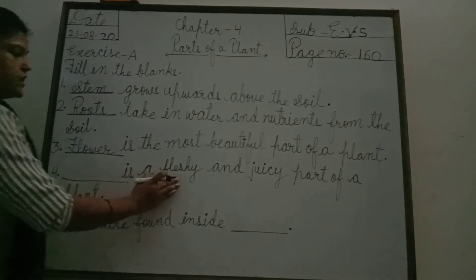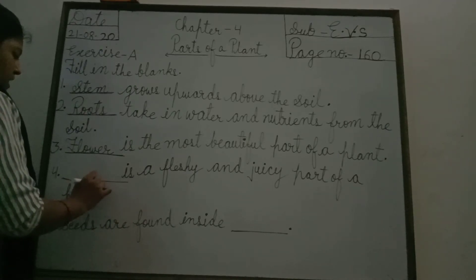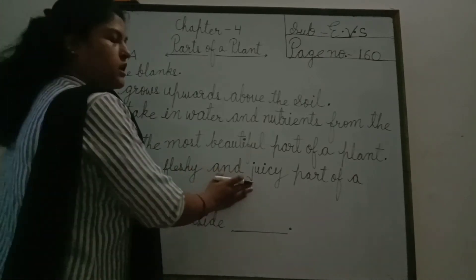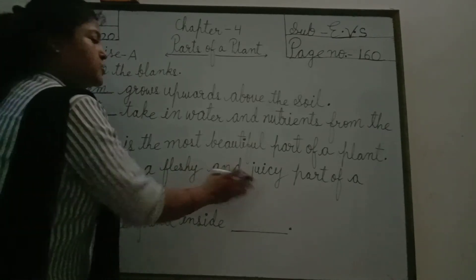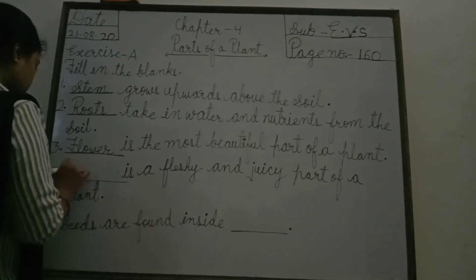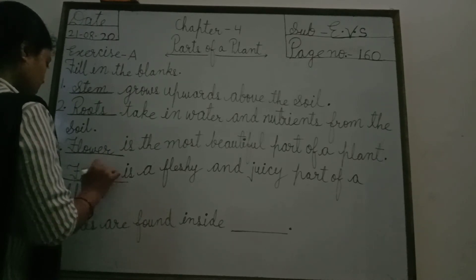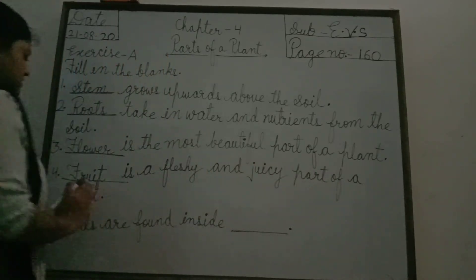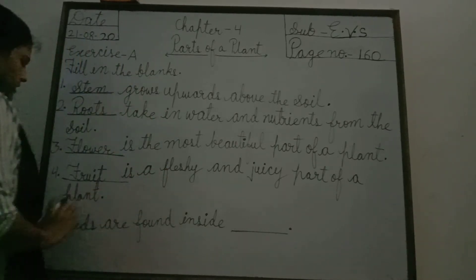Question number 4 is: dash is a fleshy and juicy part of a plant. Plant ke aise koon se part hain jho fleshy — means motor — and juicy — means rastdar — hoote hain? The answer is fruits. The spelling is F-R-U-I-T. Fruit is a fleshy and juicy part of a plant. Fruit plant ke fleshy and juicy part hoote hain.